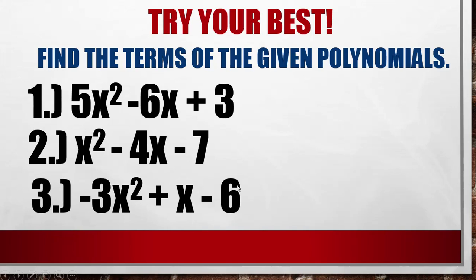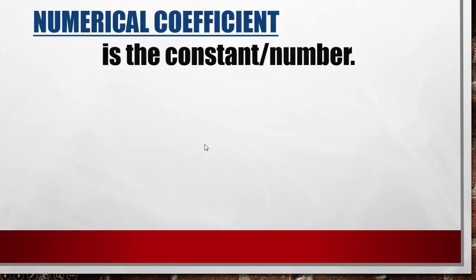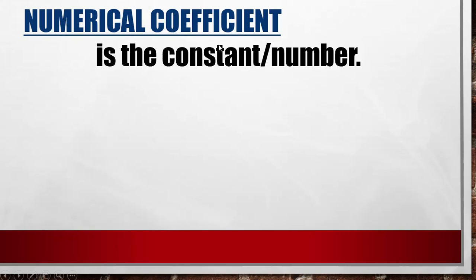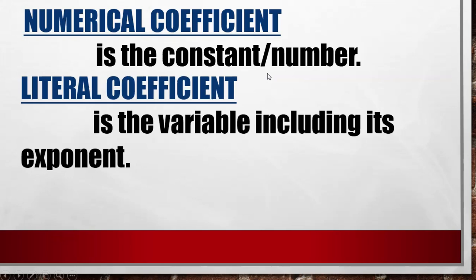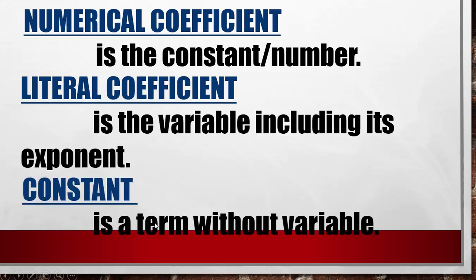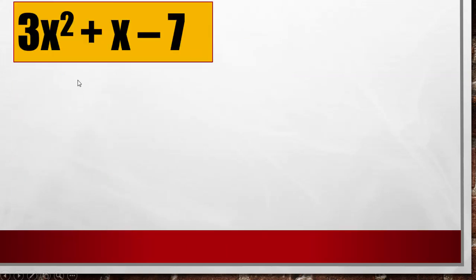Number three: 3x² + x − 6. The first term is negative 3x², the second term is x, and the third term is negative 6. Now let's continue — numerical coefficient is the constant or a number. Literal coefficient is the variable including its exponent. And the constant is a term without a variable.